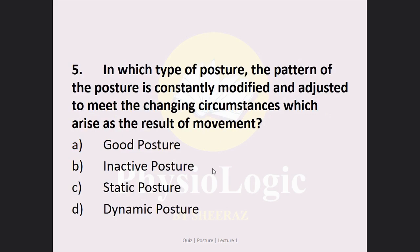MCQ number 5: In which type of posture is the pattern constantly modified and adjusted to meet the changing circumstances that arise as a result of movement? Option A: good posture, Option B: inactive posture, Option C: static posture, Option D: dynamic posture. The correct answer is Option D, dynamic posture, because there is movement and changing circumstances — the body is changing position moment after moment.